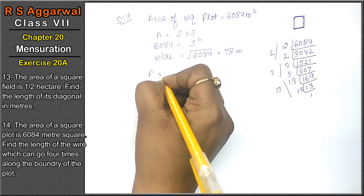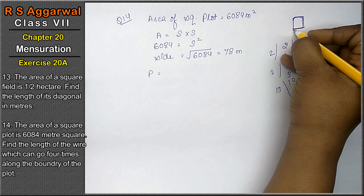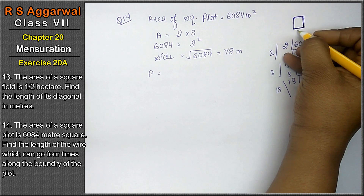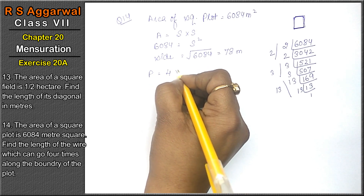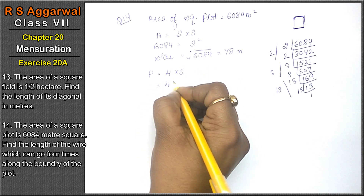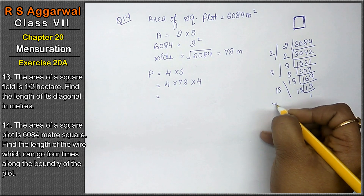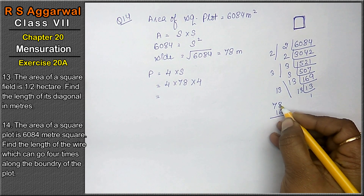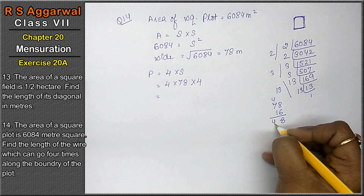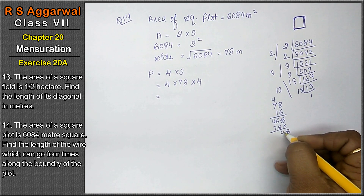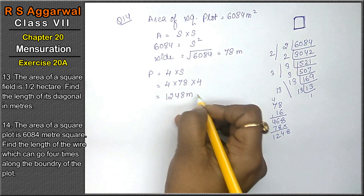अब perimeter निकालना होगा boundary के लिए. Perimeter = 4 × S = 4 × 78. लेकिन wire को 4 बार लपेटा गया, तो total = 78 × 4 × 4 = 78 × 16 = 1248 meters is the answer.